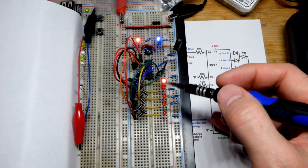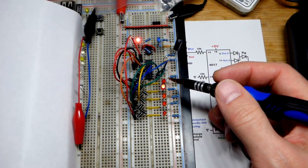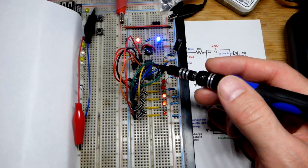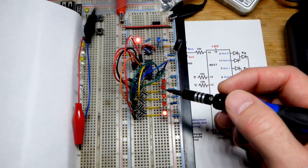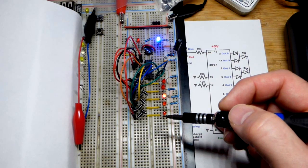So now we have a five LED Knight Rider effect right here. We're using a 4017 decade counter, and each time we get a high output the LED changes - the output changes, I should say.